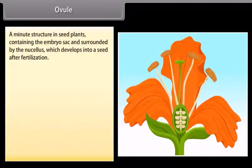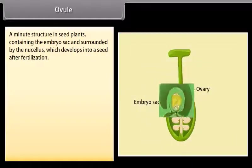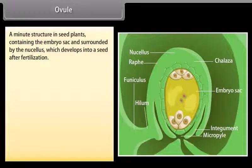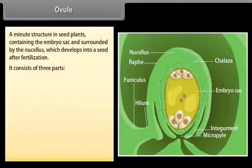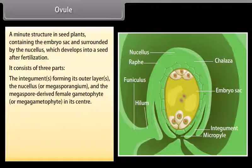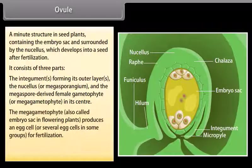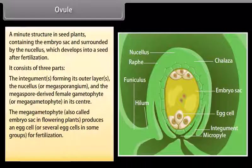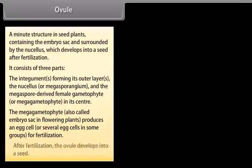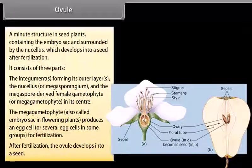The ovule is a minute structure in seed plants containing the embryo sac and surrounded by the nucellus, which develops into a seed after fertilization. It consists of three parts: the integuments forming its outer layers, the nucellus or megasporangium, and the megaspore-derived female gametophyte or megagametophyte at its center. The megagametophyte, also called the embryo sac in flowering plants, produces an egg cell for fertilization. After fertilization, the ovule develops into a seed.